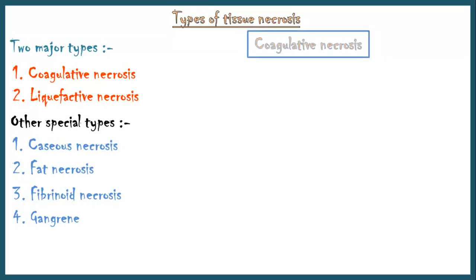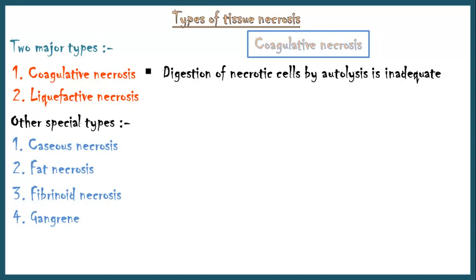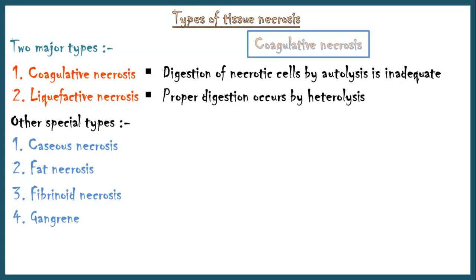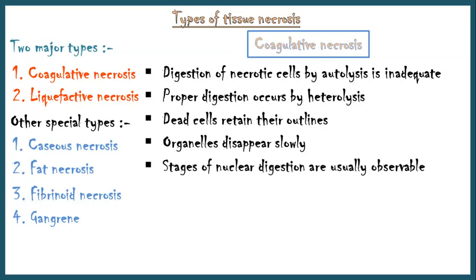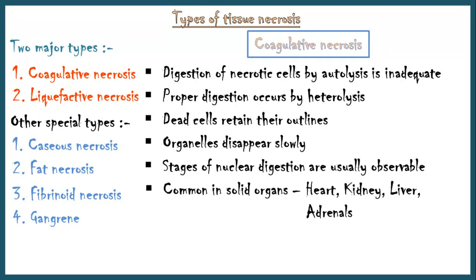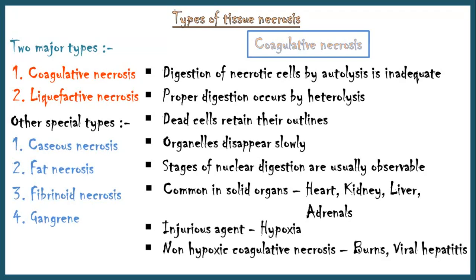In coagulative necrosis, digestion of necrotic cells by autolysis is inadequate and proper digestion occurs by heterolysis. Therefore, dead cells retain their outlines for several days, and the organelles disappear slowly. The stages of nuclear digestion are usually observable. Coagulative necrosis is commonly seen in solid organs like heart, kidney, liver, and adrenals. The typical injurious agent is hypoxia. In addition, non-hypoxic coagulative necrosis can be seen in burns and in viral hepatitis.